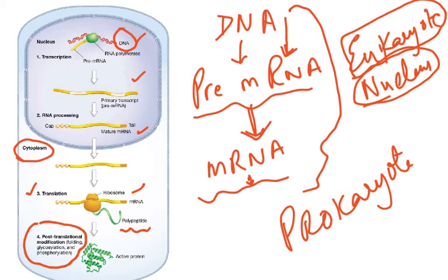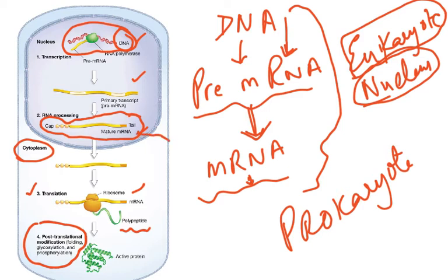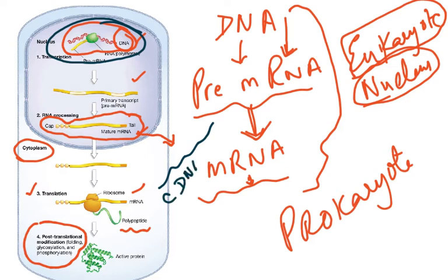If we put human DNA directly into bacteria it will not work, because bacteria are prokaryotes that cannot do RNA processing. So instead we get the mature mRNA and use the enzyme reverse transcriptase to make a DNA strand. This is not the original DNA, so it is called cDNA.